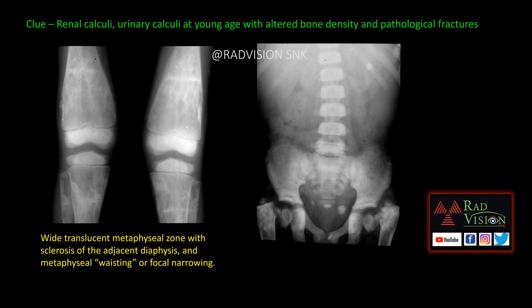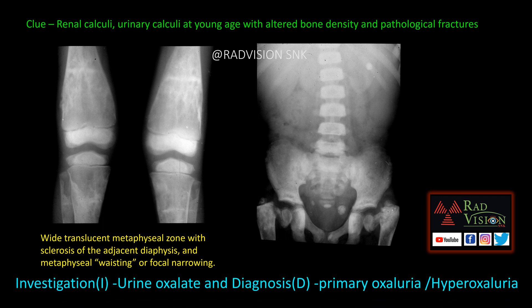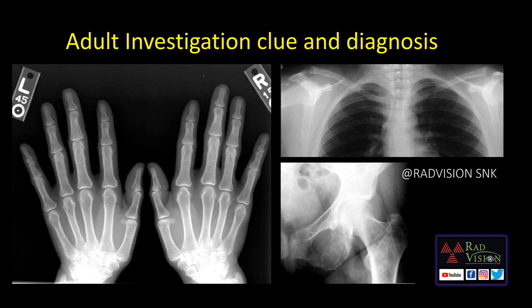The investigation we need to do is urinary oxalate levels — these will be raised — and the diagnosis is primary hyperoxaluria. So whenever you see renal calculi, vesicle calculi, pathological fractures, altered bone density (whether osteosclerosis or osteoporosis), and metaphyseal wasting, definitely suspect primary hyperoxaluria.